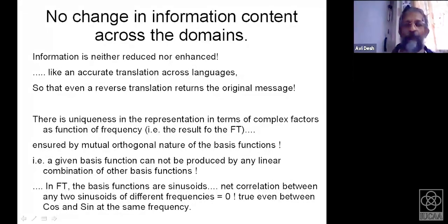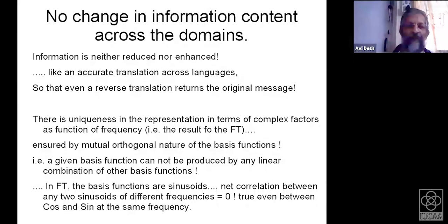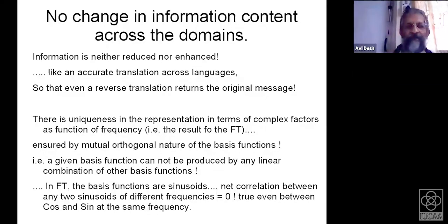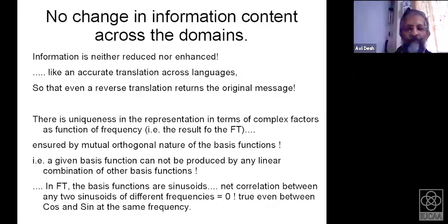The basis functions are mutually orthogonal in nature — their dot products are zero. You can think of a multi-dimensional space in which each sinusoid represents an axis orthogonal to every other axis. We take the function at hand and take its projections along each axis; the projected value is the coefficient. A given basis function cannot be produced by any linear combination of other basis functions — this is what we have when we have orthogonal axes or a system of orthogonal functions.